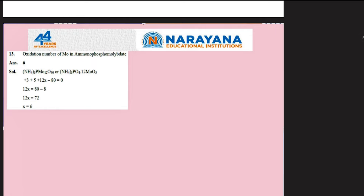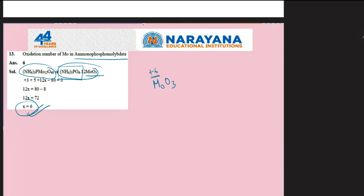The oxidation number of molybdenum in the ammonium phosphomolybdate complex — this complex is formed in the test for phosphate ions, giving a bright yellow (canary yellow) precipitate. Looking at the formula (NH4)3PO4, that part is neutral. Considering only MoO3, we get the oxidation number of molybdenum as +6. The answer is 6.